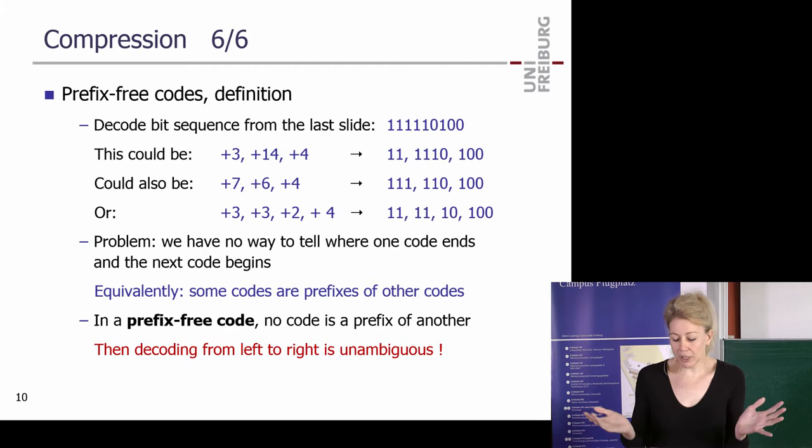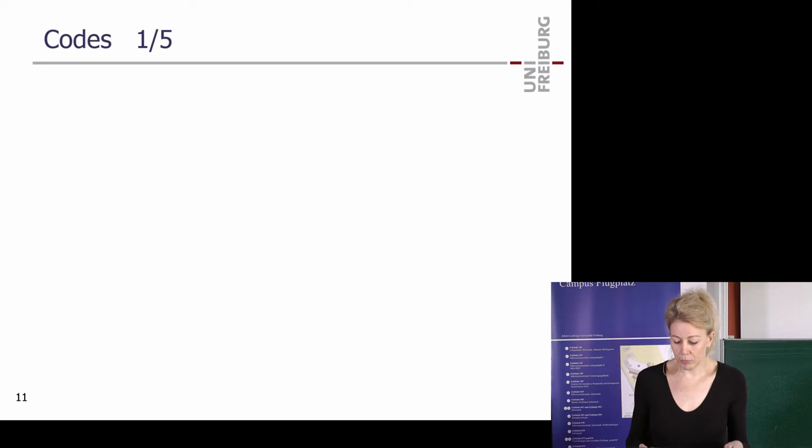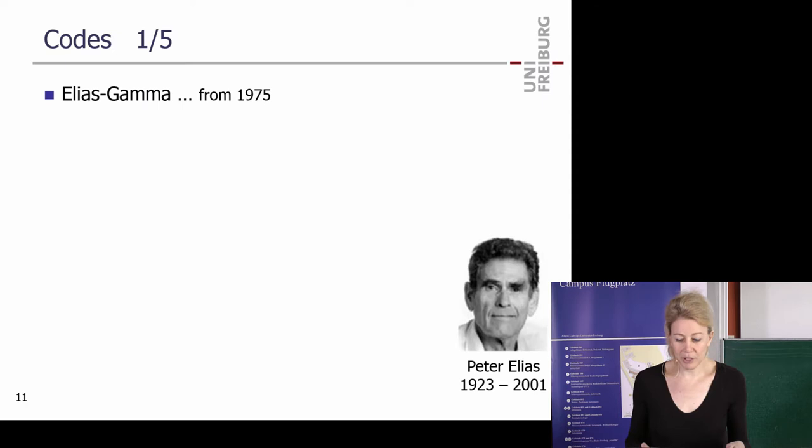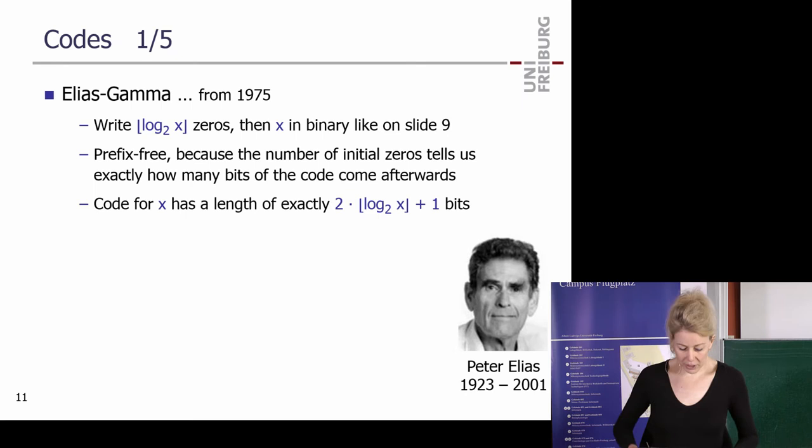We'll now look at a number of prefix-free codes, some historical and some actively used in practice. The simplest is Elias Gamma. It has a code length of twice the optimum — you pay a factor of two for prefix-freeness.